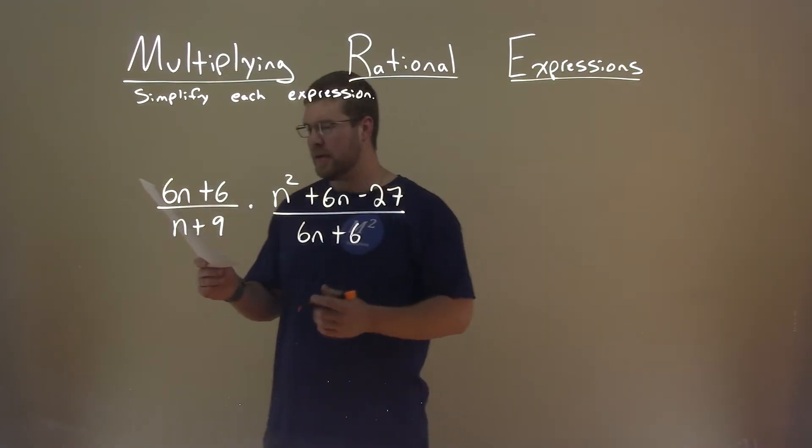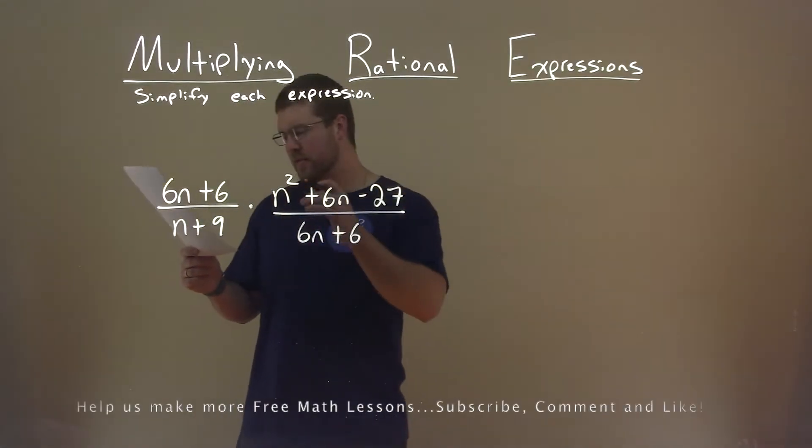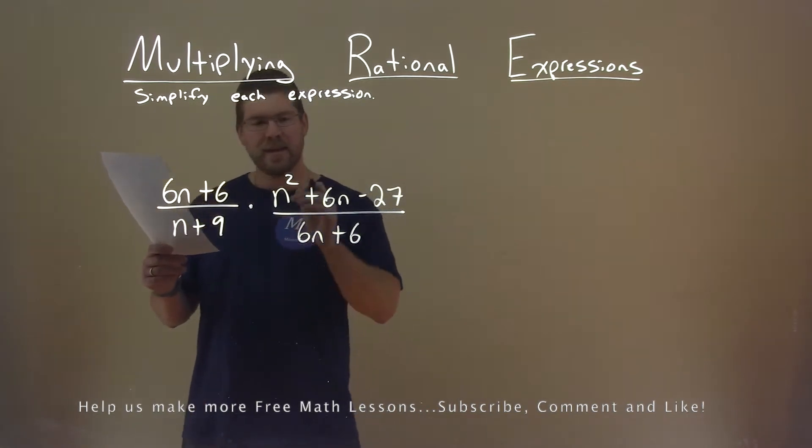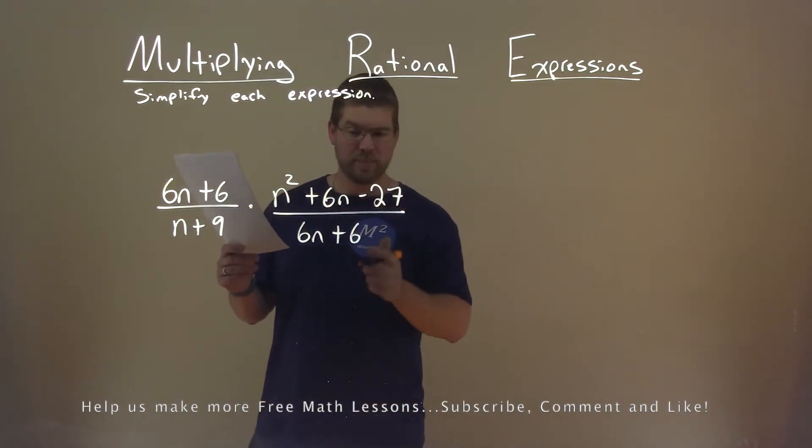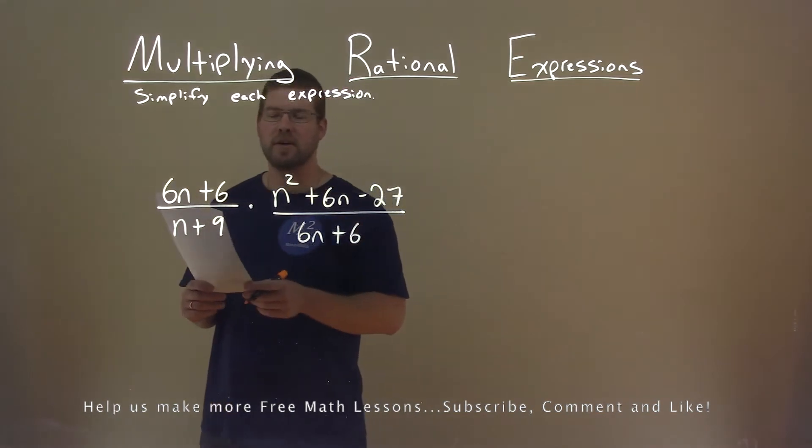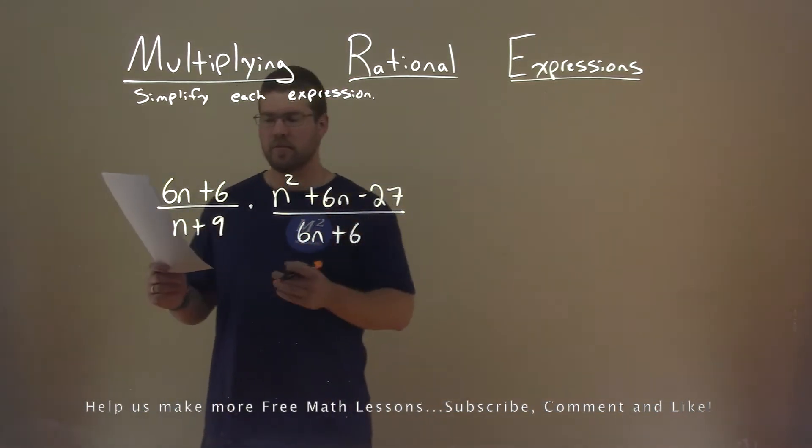We're given this problem right here: 6n plus 6 divided by n plus 9 times n squared plus 6n minus 27 divided by 6n plus 6. And we want to simplify this expression.